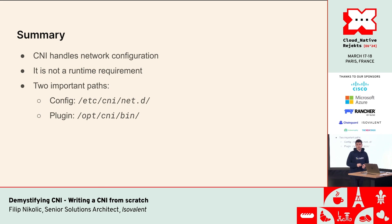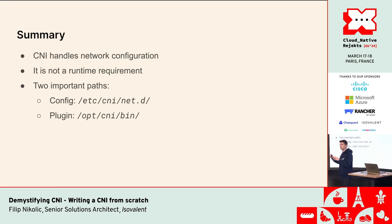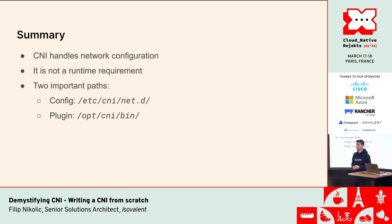To summarize: two important paths — /etc/cni/net.d and /opt/cni/bin. CNI handles network configuration. And very importantly, it is not a runtime requirement — it's not involved in directing or load balancing traffic; for that we have systems like kube-proxy with iptables, IPVS, or what Cilium uses. Once the pods have been created, you could actually remove the CNI entirely from a cluster and everything will still work fine — you'd just have issues deleting and creating new pods. Thank you so much.